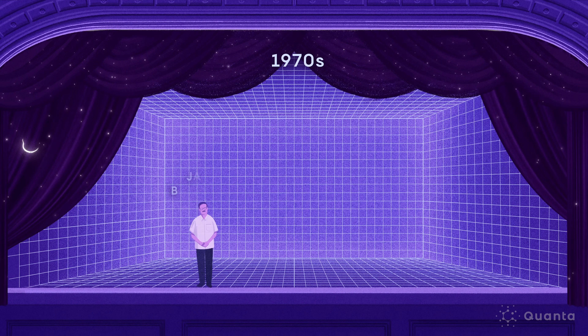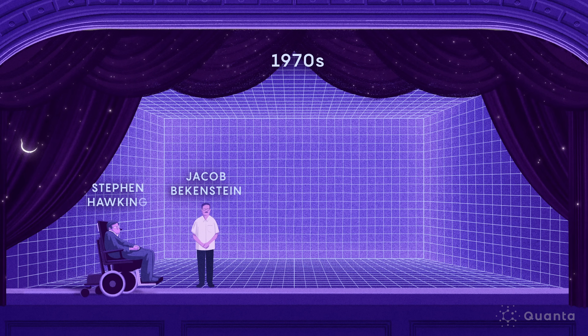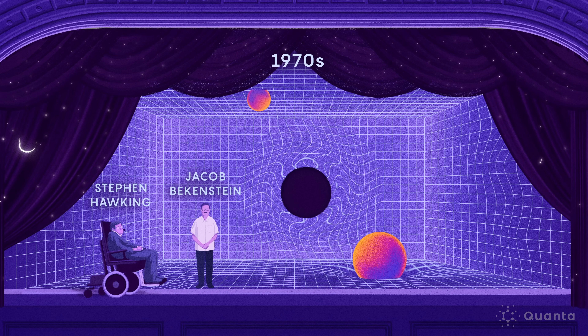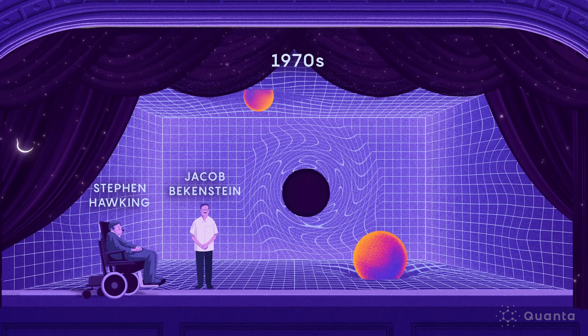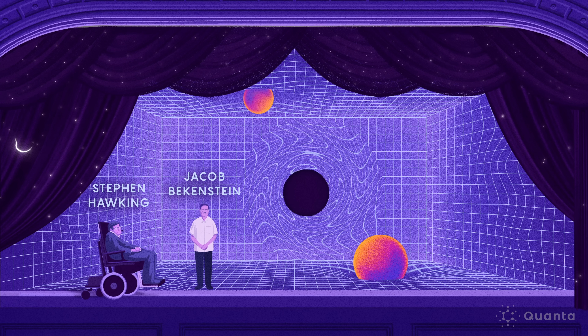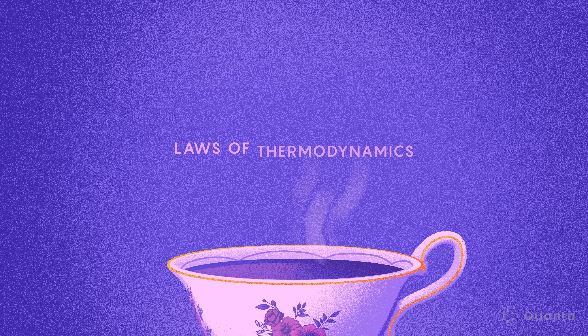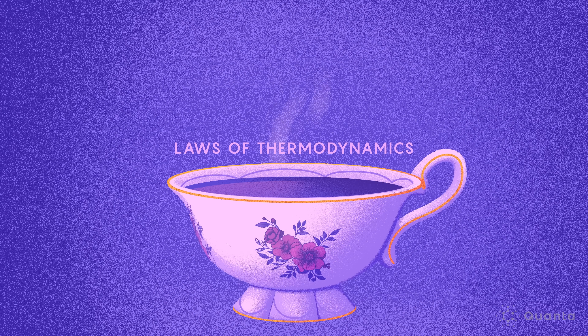Something deeper is happening here. We might be tempted to ask: what if space-time isn't the base layer of reality? What if there's a more fundamental description of physics which produces something that looks like space-time? In the 1970s, Jacob Bekenstein and Stephen Hawking stumbled on a compelling clue about the nature of quantum gravity. To appreciate the profound implications of what they discovered, we need to first review the laws of thermodynamics and their origin in statistical physics.